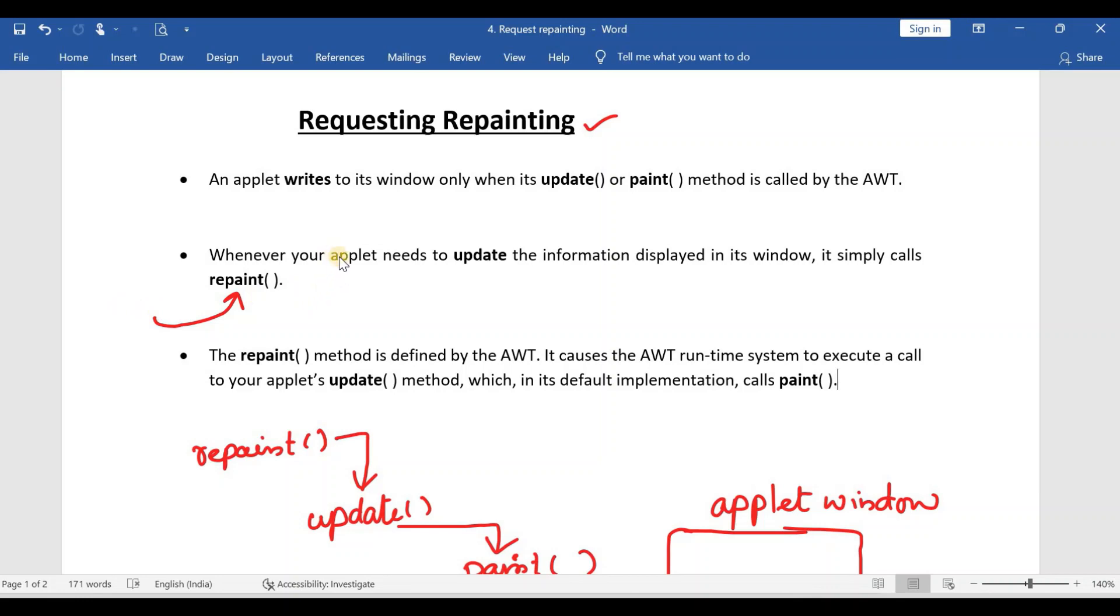The same thing was given here. So whenever your applet needs to update the information displayed in its window, it simply calls the repaint method. So this repaint method is defined by the AWT package, and it causes the runtime system to execute a call to your applet's update method.